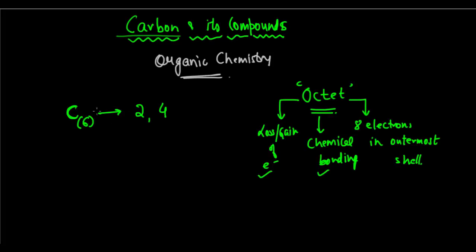Now look at carbon. Carbon has four electrons in its outermost shell. So if we look into this in terms of losing or gaining electrons, we can say that carbon has two choices. Number one, it can lose four electrons.